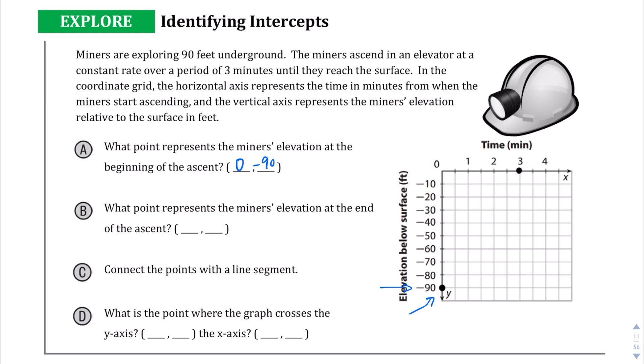Okay, what point represents the miner's elevation at the end of the ascent? Well, we're told that it takes three minutes to get up to the surface, and at the surface there's zero feet underground, because it's the surface.